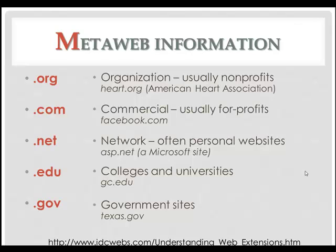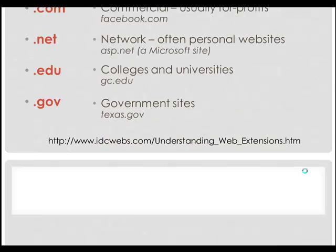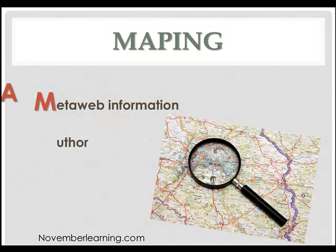If you don't get what you need from the URL, the next place you can go is to the author. Who wrote this website? What organization sponsors this website? Is it credible? Is it a fringe group? For the most part, middle-ground type information is your best information. Any extreme one way or the other, you need to question and take a careful look at.